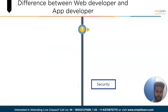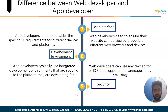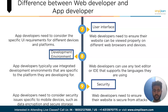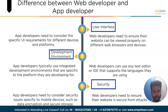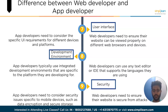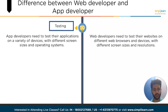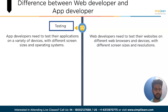Point number seven is user interface — app developers need to consider specific user interface requirements for different devices and platforms, whereas web developers need to ensure their websites can be viewed properly on different web browsers and devices. Next is development environment — app developers typically use integrated development environments specific to the platform they are developing for, whereas web developers can use any text editor or IDE that supports the language they are using. Ninth is security — app developers need to consider security issues specific to mobile devices such as data encryption and secure storage, while web developers need to ensure their website is secure from attacks such as cross-site scripting and SQL injection. Last is testing — app developers need to test their applications on a variety of devices with different screen sizes and operating systems, whereas web developers need to test their websites on different web browsers and devices with different screen sizes and resolutions.